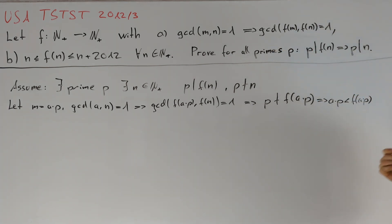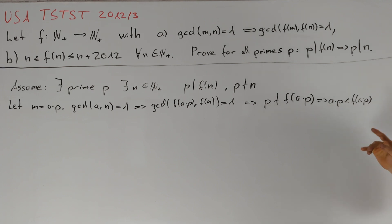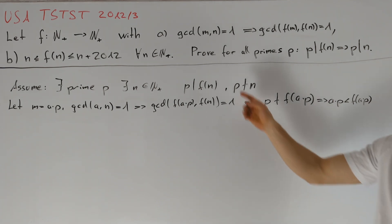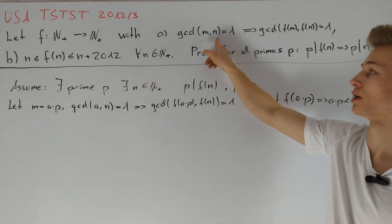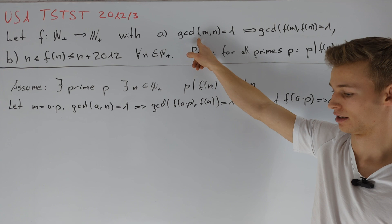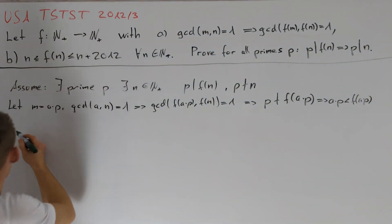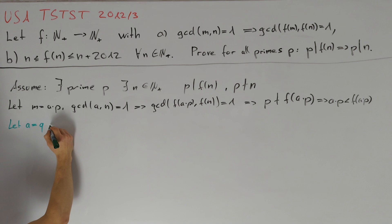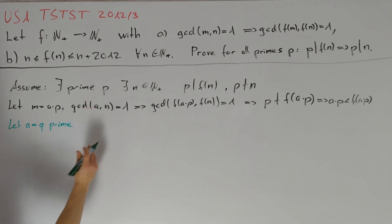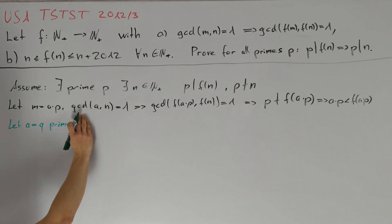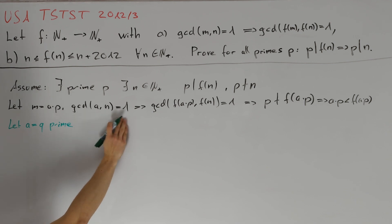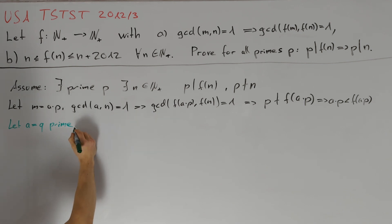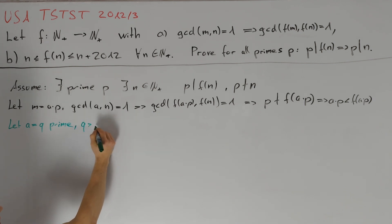Moreover, it would be great if the number of prime divisors of a is small, because then it is easier to achieve the equality on the left-hand side. So let's first take a = q, which should be a prime number. In order to get that gcd(q, n) = 1, we also want that q is greater than n.